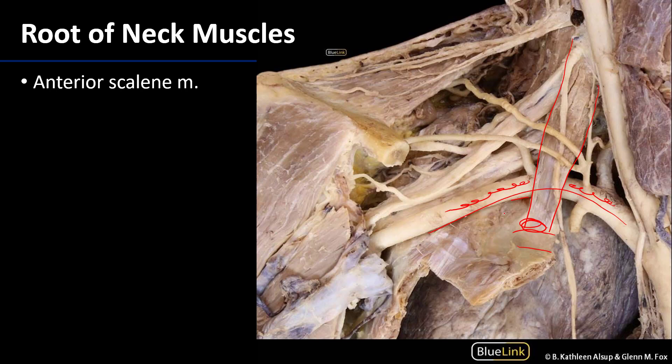The anterior scalene is innervated by branches of the ventral primary rami of cervical nerves C4 through C6. When flexed, it can provide forward or lateral flexion of the C-spine, but its major action is to elevate the first rib. Pulling up that first rib increases the volume of the thoracic space, contributing to inhalation by decreasing intrathoracic pressure.